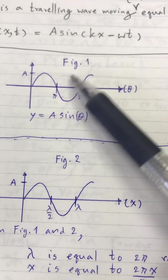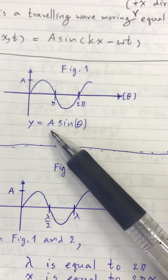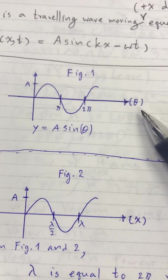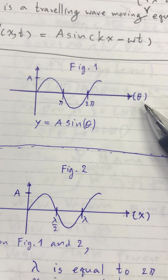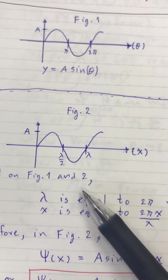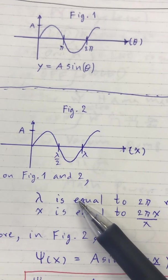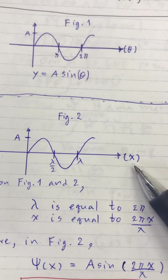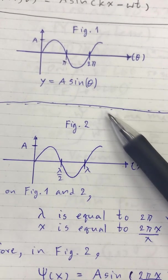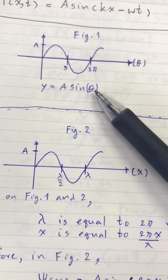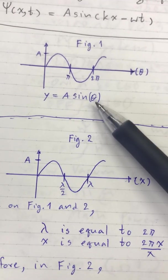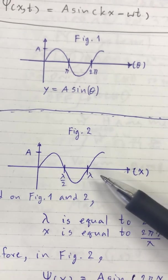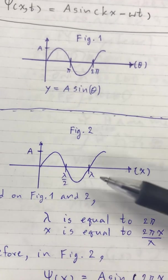Feature 1: this is the sine function, where A is the amplitude and theta is in units of radians. If we consider a sine wave moving in space, I consider only one dimension — the x. However, x has units of meters, so we cannot directly put x (in meters) into theta (in radians). We have to convert x to radians.